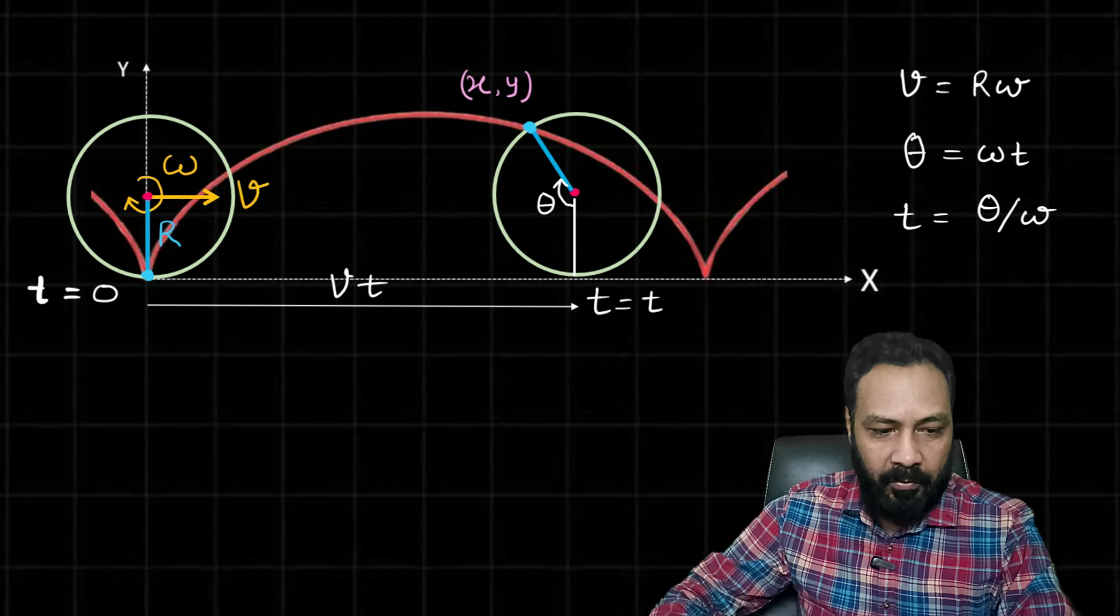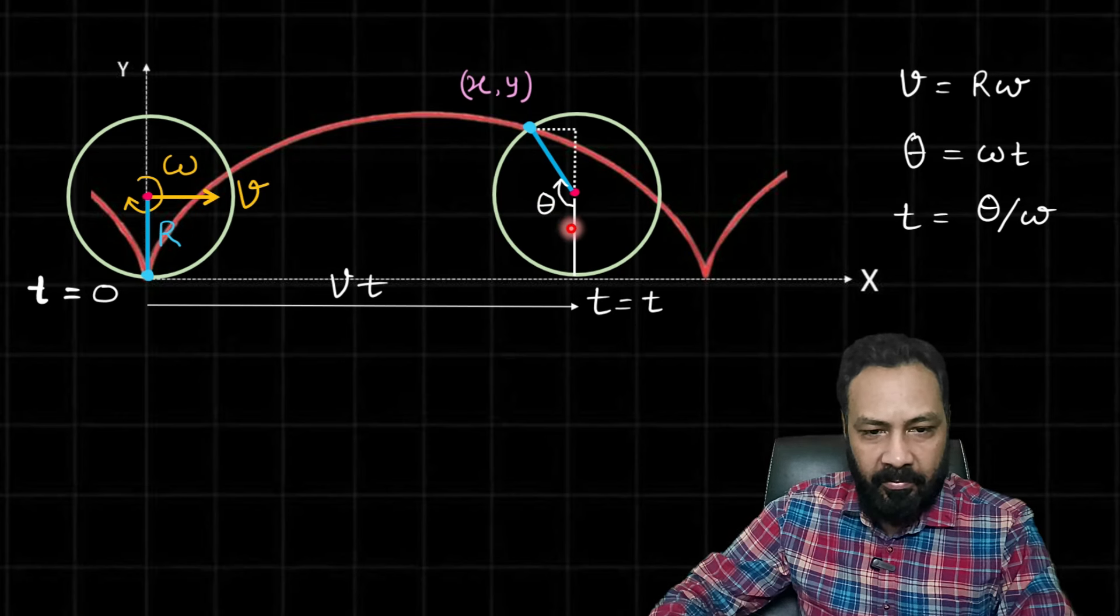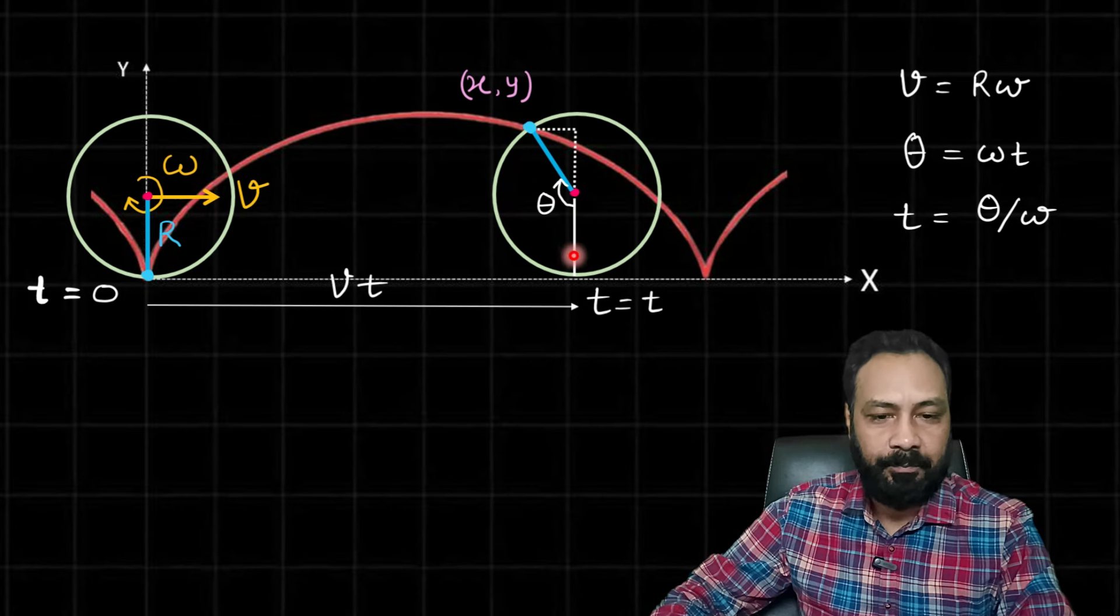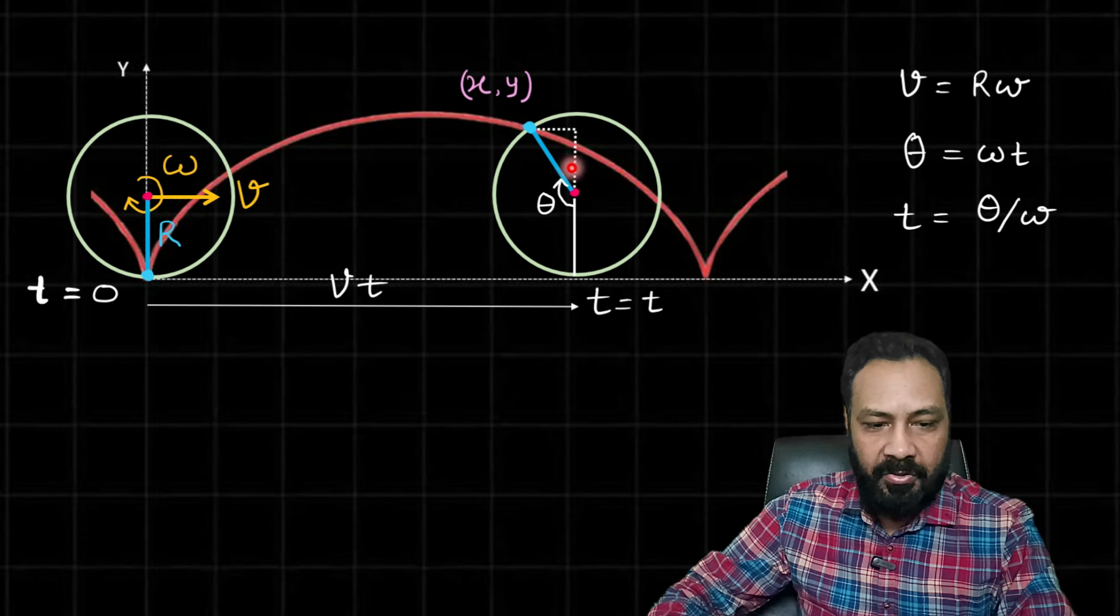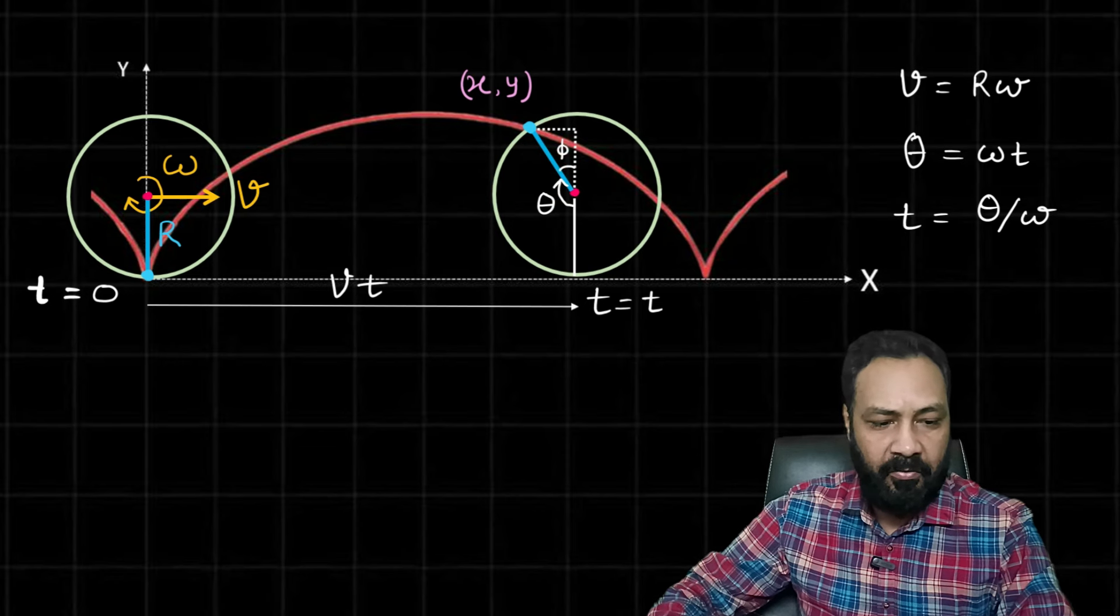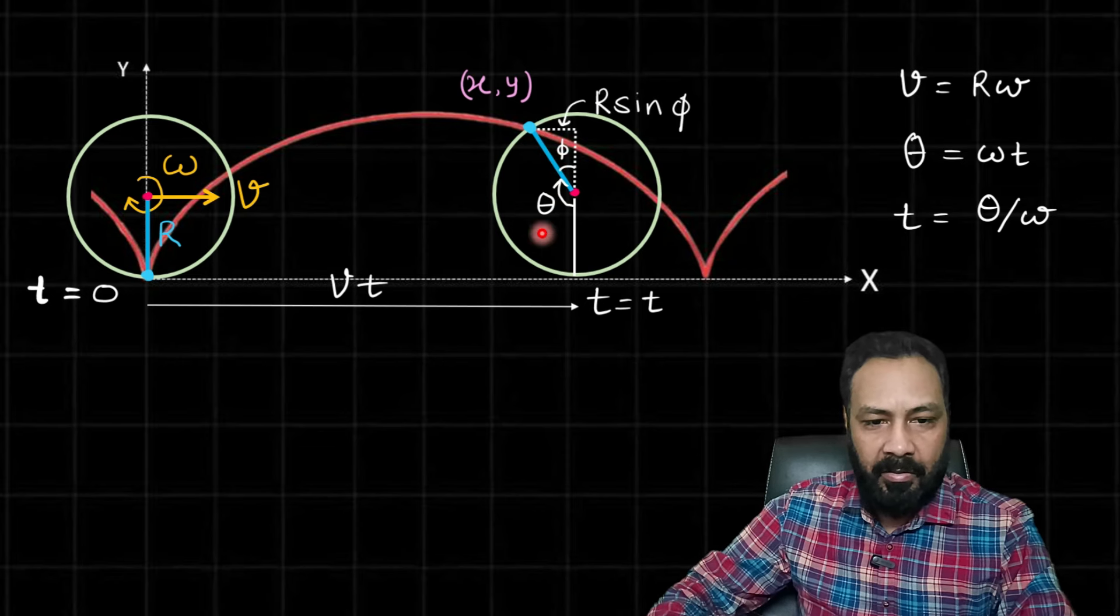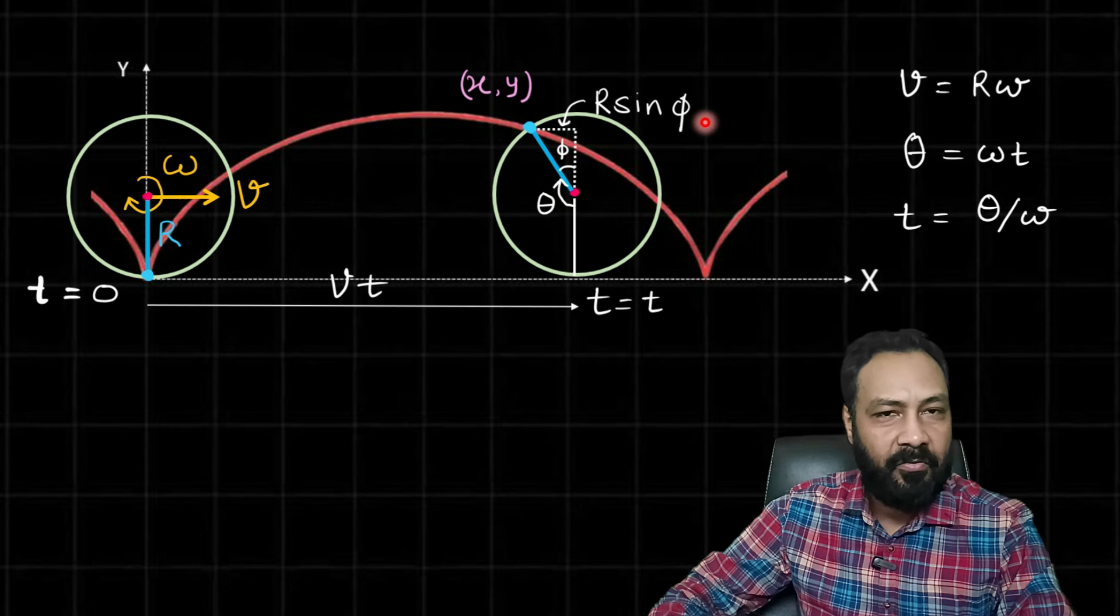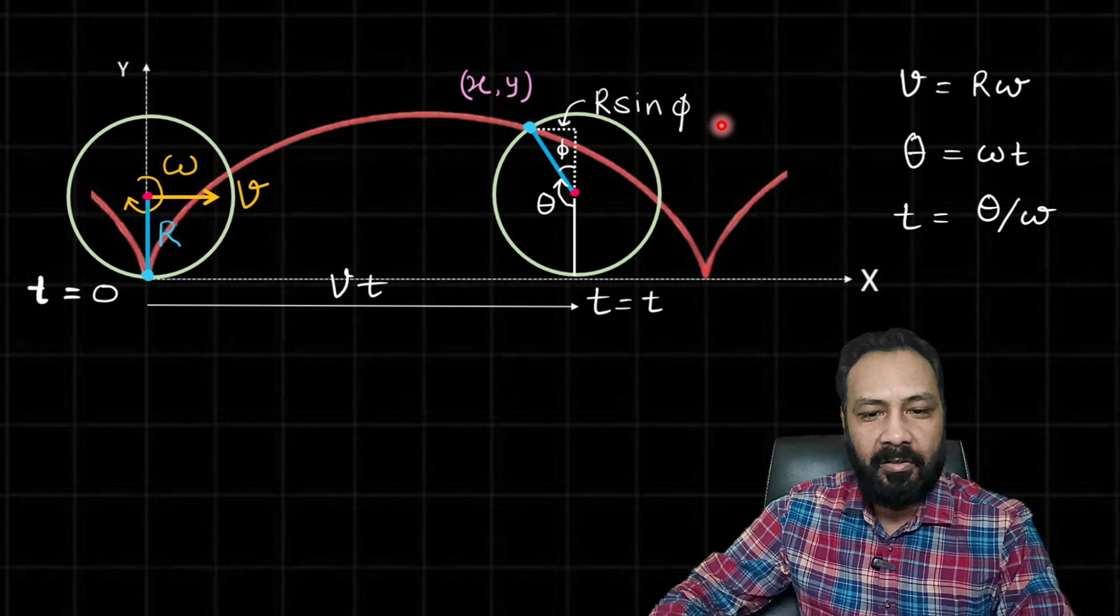Now what we want to do, I just have extended this line and this is a perpendicular from this point to this line. So let me assume this angle is say phi, and this radius is r. So this thing is r*sin(phi), and see this phi is 180 minus theta, so sin(phi) is sin(180 - theta) that is sin(theta). So this length is r*sin(theta).